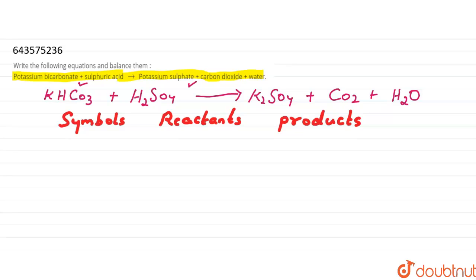First, let's write symbol K for potassium. How many potassium atoms are on the reactant side? One. And on the product side? Two. Next, hydrogen H — how many hydrogen atoms on the reactant side? Three. And on the product side? Two.